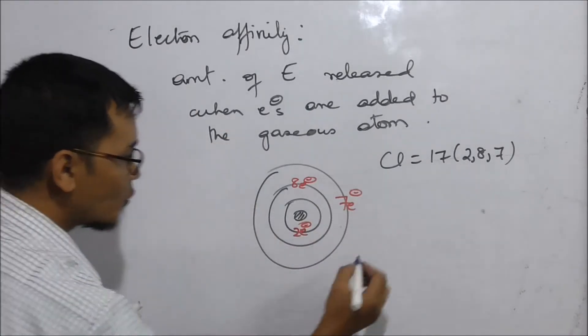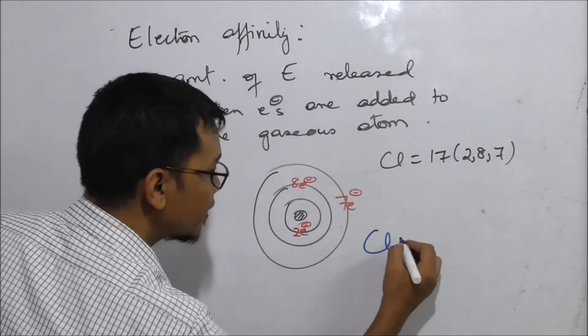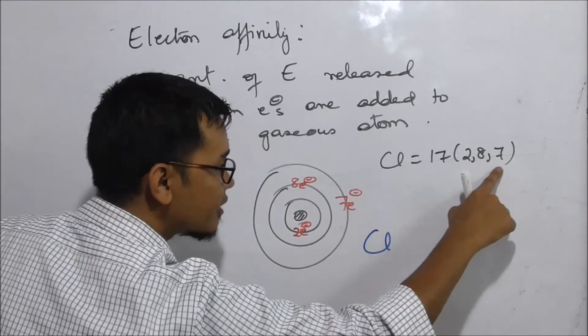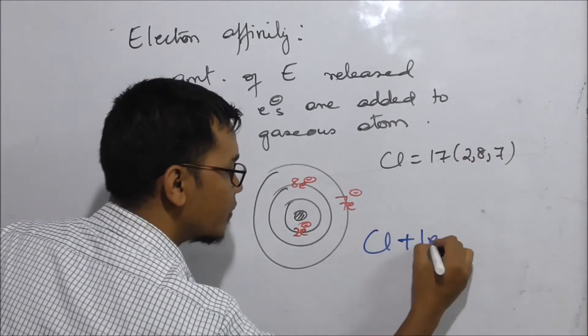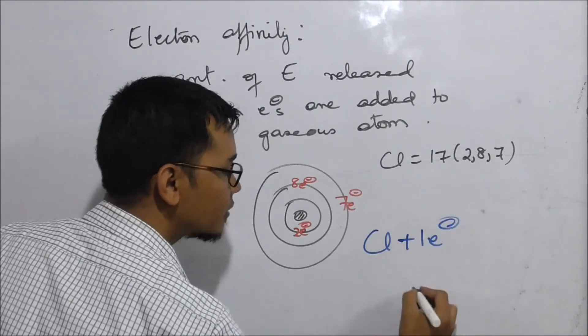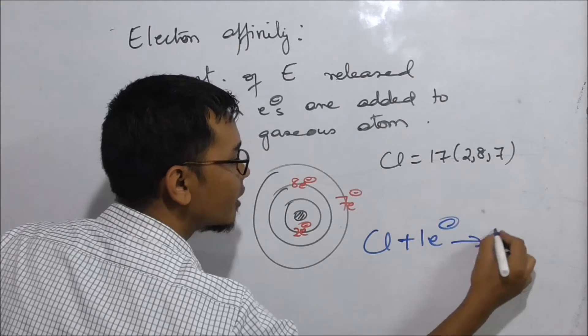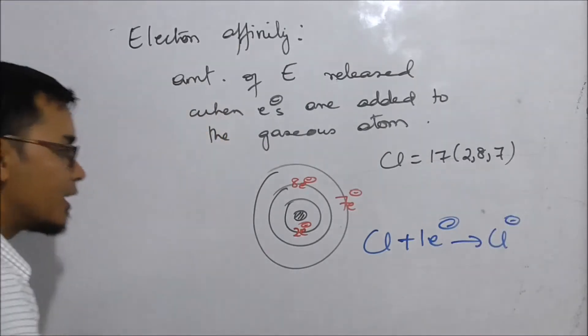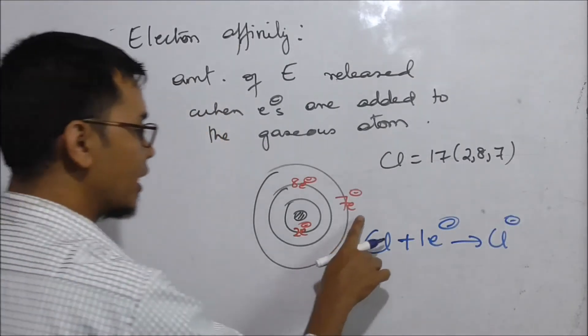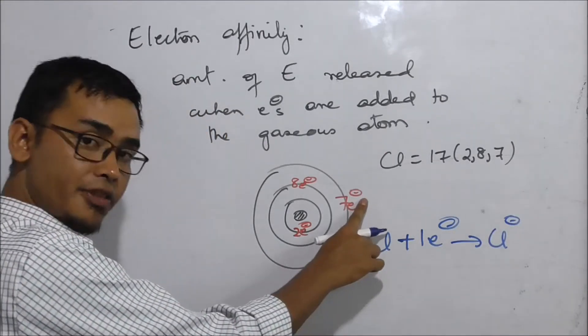When chlorine gains 1 electron, it will become Cl⁻. The electrons have a negative charge.